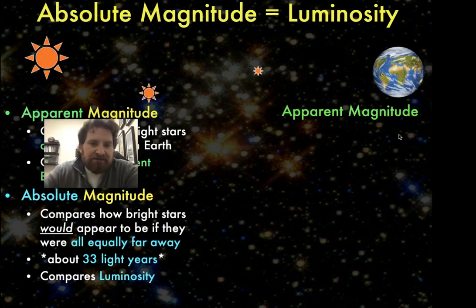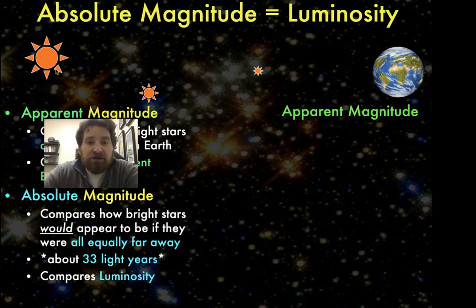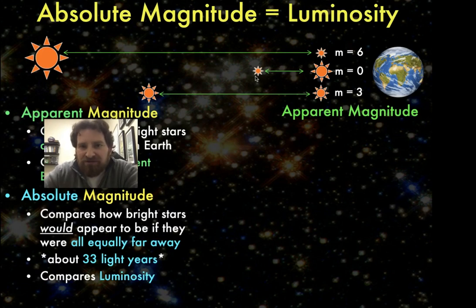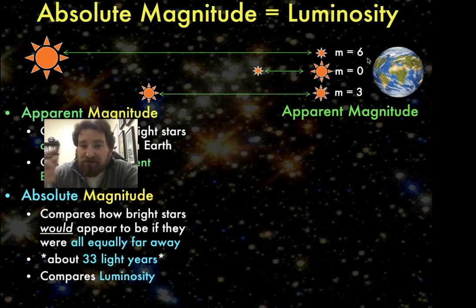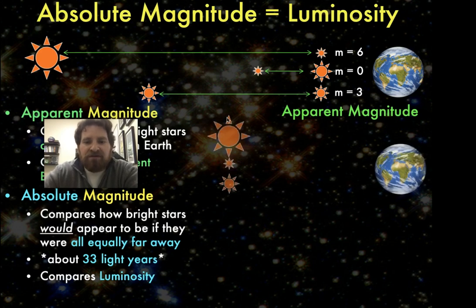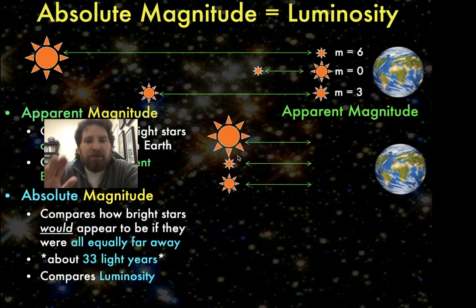Let's imagine three stars at different distances from Earth. One is extremely luminous, one has very low luminosity, and one is in between. Even though the most luminous star is the brightest intrinsically, it's so far away that to our eyes it appears the dimmest. And even though the least luminous star is the faintest intrinsically, it's so close that to our eyes it appears the brightest. Their apparent magnitudes reflect how bright they appear to our eyes, but not their actual luminosity. If we move them all to the same fixed distance, differences in brightness are purely due to luminosity.